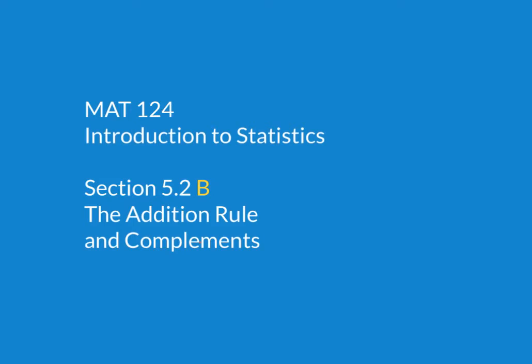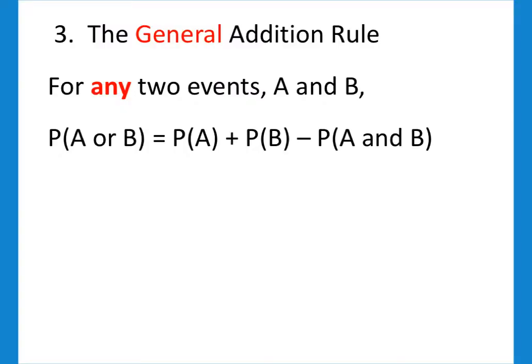All right, time for part B of the addition rule and complements. Actually, it should be the addition rules, because last time we talked about the addition rule for disjoint events, but now we're going to talk about the general addition rule. For any two events, they do not have to be disjoint. For any two events, the probability of A or B is equal to the probability of A plus the probability of B minus the probability of A and B.